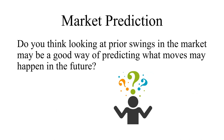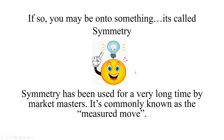Market prediction: do you think looking at prior swings in the market may be a good way of predicting what moves may happen in the future? If you do, you are on to something — it's called symmetry. Some of you may have heard of symmetry before; let me know in the chat. Symmetry has been used for a very long time by market masters, and it's commonly known as the measured move. Basically what we do is look at previous swings and say this is where the market may stop — which is resistance — or this is where the market may hold — which is support.